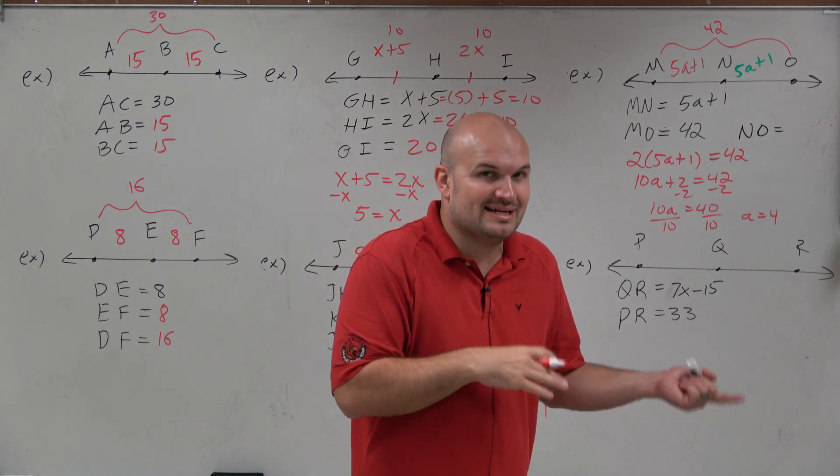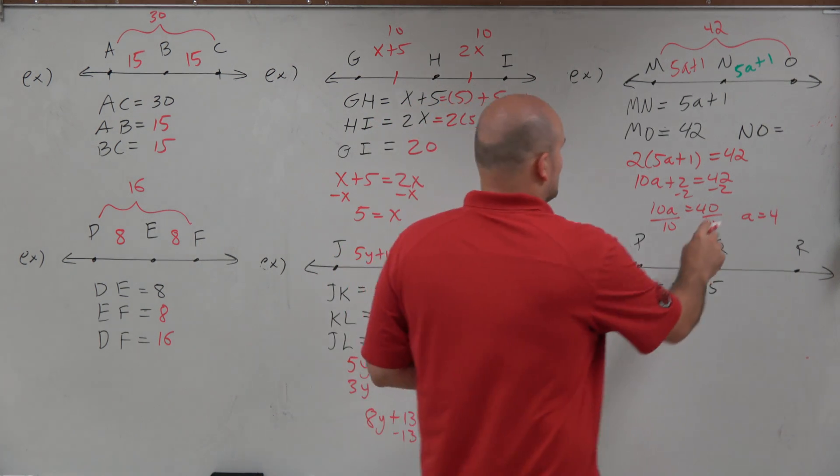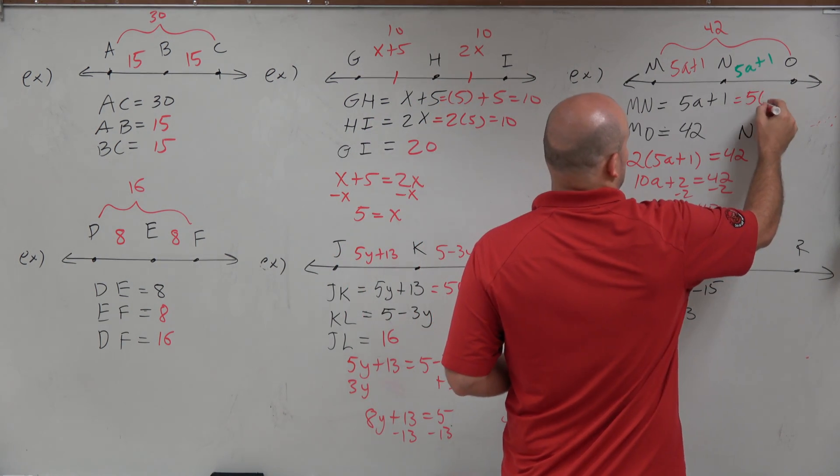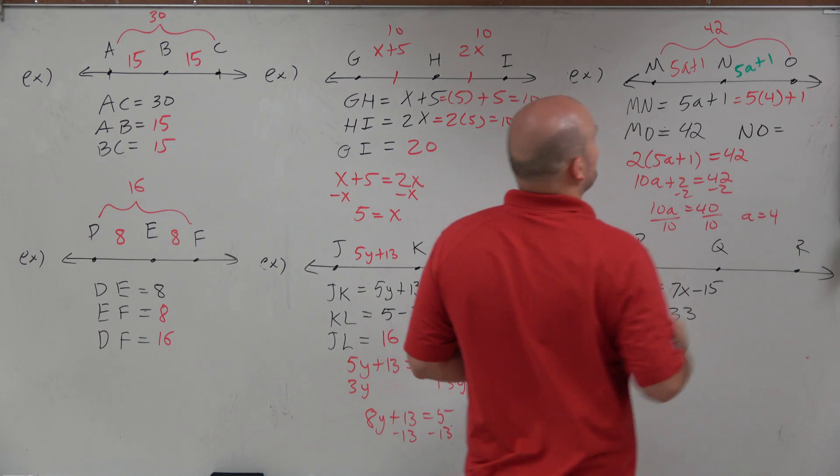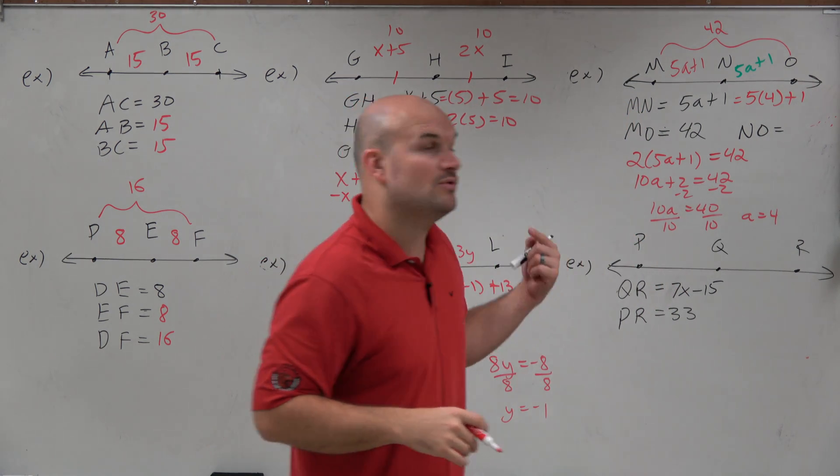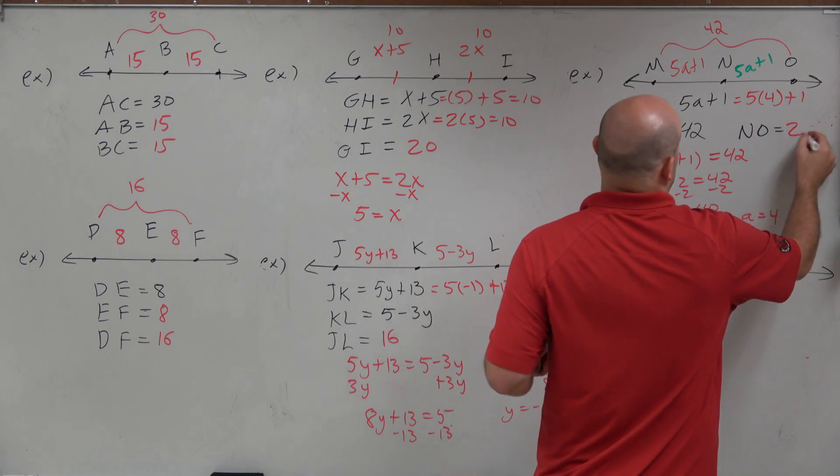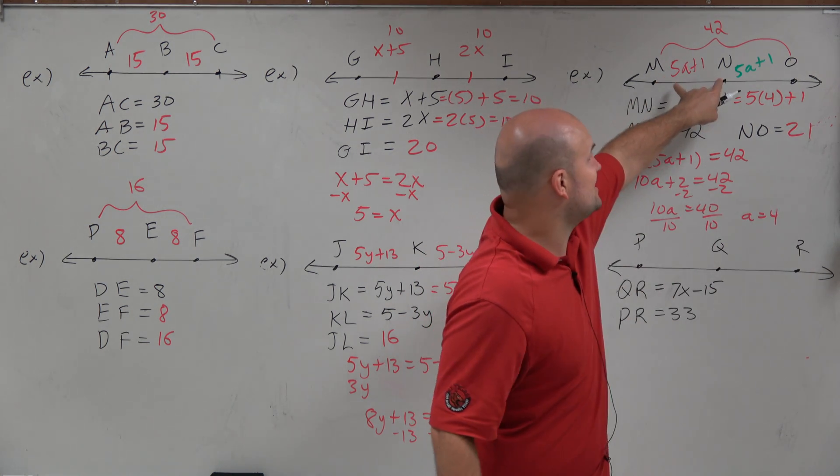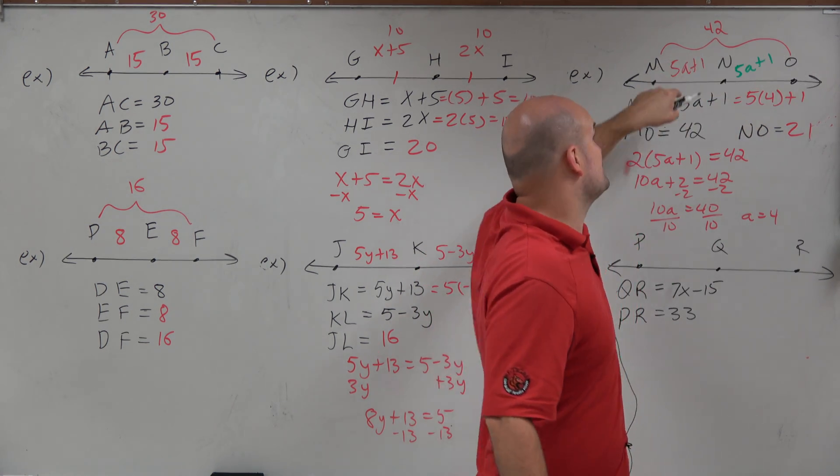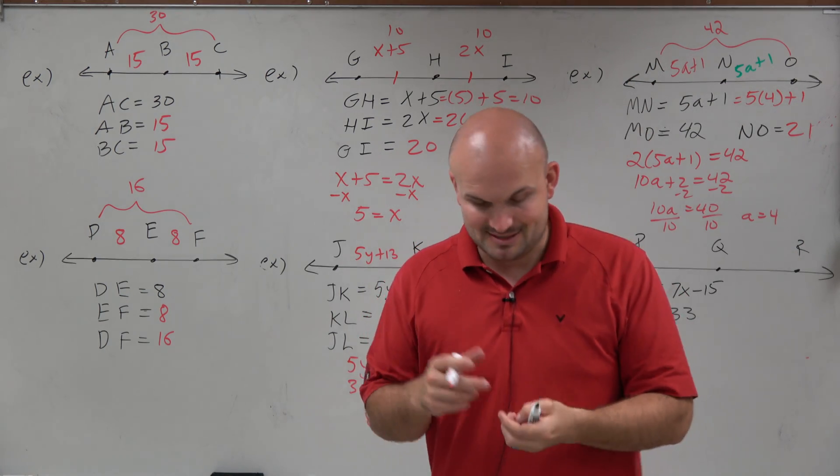So we know a is equal to 4. So let's just do 5 times 4 plus 1. 5 times 4 is 21 plus 1 is, you know, 5 times 4 is 20 plus 1 is 21. And then let's make sense. If that's 21 and that's 21, does 21 plus 21 equal 42? Yes. So we're good to go there.